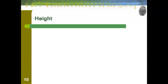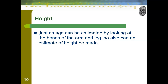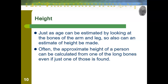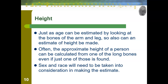Height is another characteristic we can determine from skeletal remains. An estimate of height can be made from arm or leg bones — often from just one of the long bones, such as the humerus in the arm or the femur in the leg, although estimates using the ulna, radius, tibia, or fibula can also be used. Sex and race need to be taken into consideration for this estimate, as different racial groups and sexes grow at different rates. You will be given formulas to calculate height — you just need to be able to use a ruler.